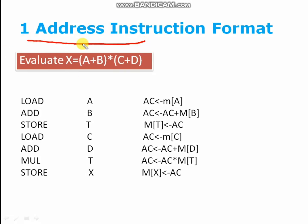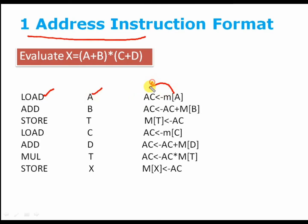One address instruction format — here we are going to use only one operand. To do so, we are going to use the accumulator, which is a temporary register. The load operation will be performed to load A into the accumulator. Memory of A will be loaded to the accumulator, and the addition operation will be performed between the accumulator and memory of B. Then we store the result in T — memory of T will store the value of the accumulator.